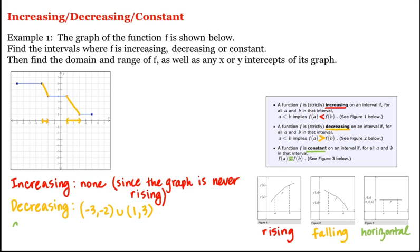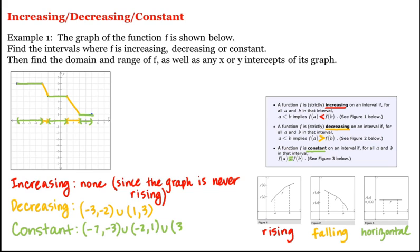Now what about where this function is constant? Looking at our graph, we see that the graph is horizontal here, here, and here, which corresponds to the intervals negative 7 up to negative 3, union negative 2 up to 1, union 3 up to 5.